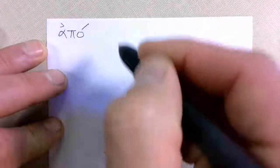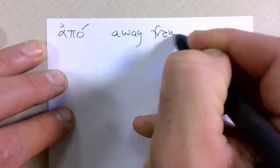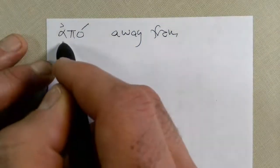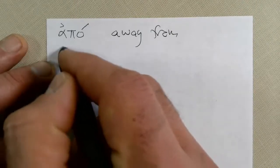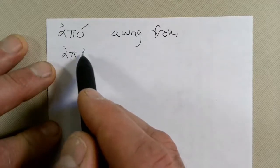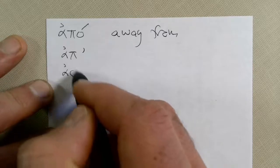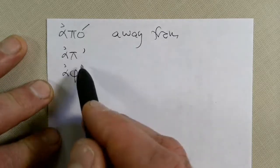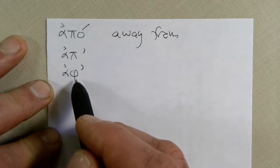Another new one. This is Apo. Apo means away from. Sometimes you will see it like this, Apo. Sometimes you will see it like this. The O drops off and is replaced with this little apostrophe. Sometimes you will see it like this. The O drops off and it's replaced with the apostrophe and then the P changes to a fee.